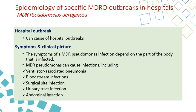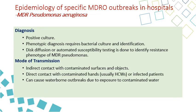MDR Pseudomonas aeruginosa can cause hospital outbreaks and the symptoms will depend on the body part affected. The most common infections include pneumonia, ventilator-associated pneumonia, bloodstream infection, surgical site infection, urinary tract infection, and abdominal infection. Diagnosis is by positive culture, also phenotypic diagnosis, and disc diffusion or automated susceptibility testing for resistance.